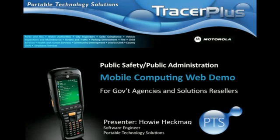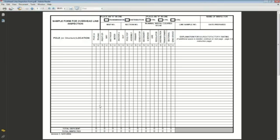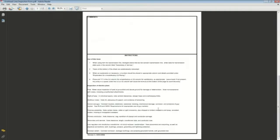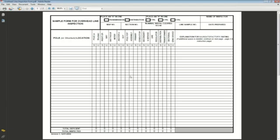I'm going to open up an overhead line inspection form. This is used to go out and do overhead line inspections. You can see from the form it's a pretty complicated form — there are instructions on the back page as to how to fill it out. There's a lot of room for error here in both handwriting and then transcription later on into a back-end database system.